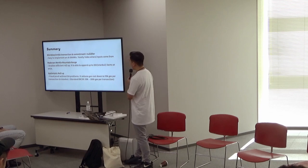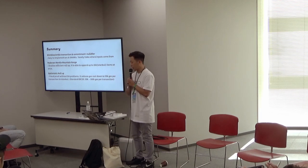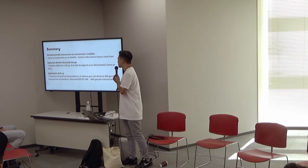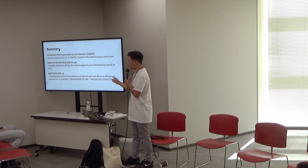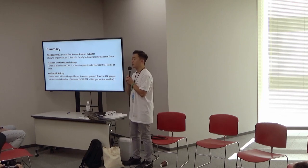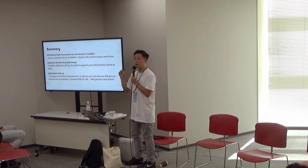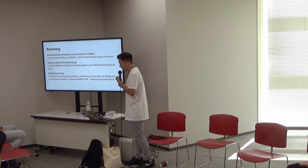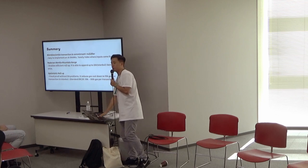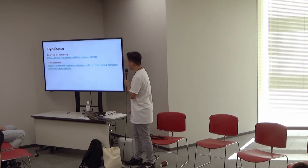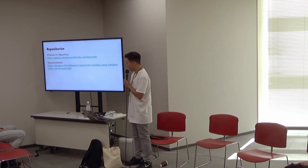Here's the summary: Ethereum 9¾ uses the MimbleWimble protocol and the commitment-nullifier scheme together. It uses the Pedersen Merkle Mountain Range for an efficient, secure rollup — therefore it is able to append up to 256 items at once. The optimistic rollup provides deterministic fraud proof without any data availability problem, and it reduces the cost down to 50,000 gas per transaction. This is the implementation — if you like it, please give me some GitHub stars.